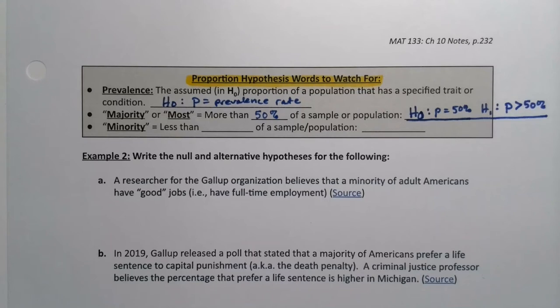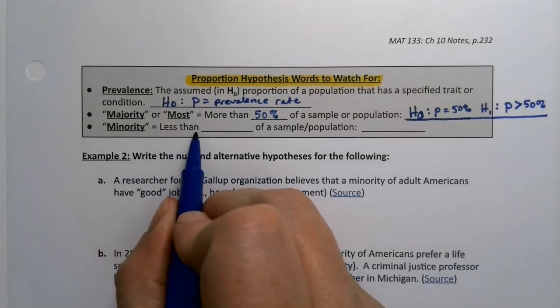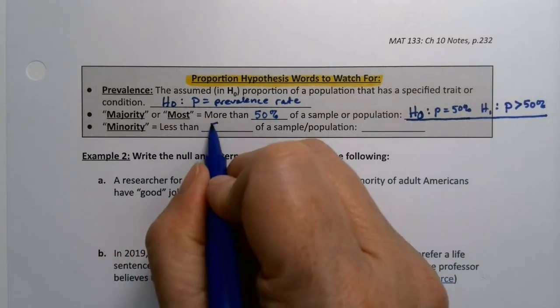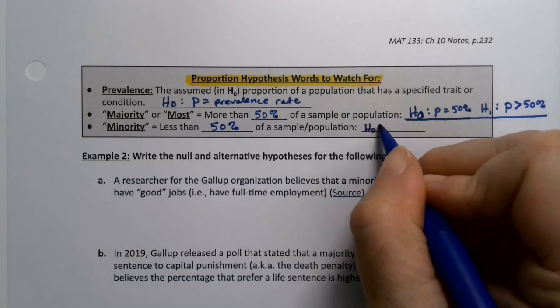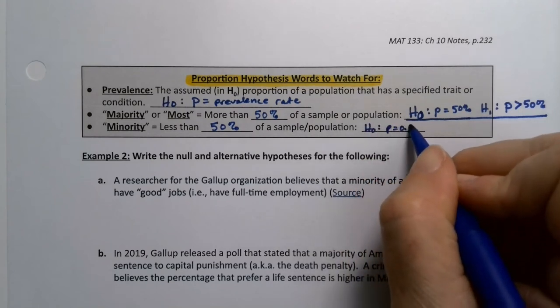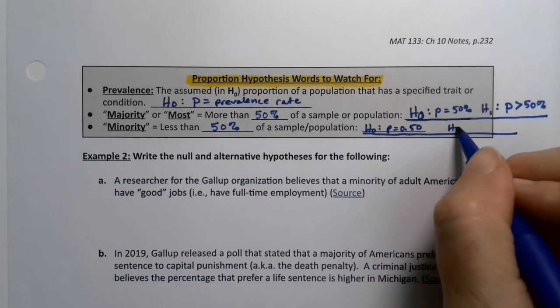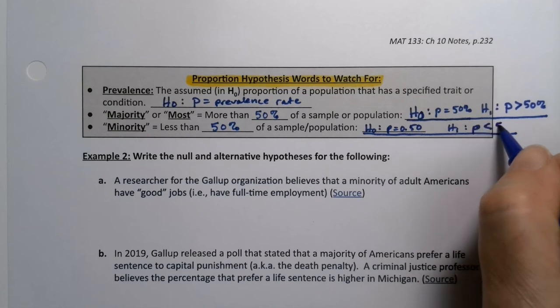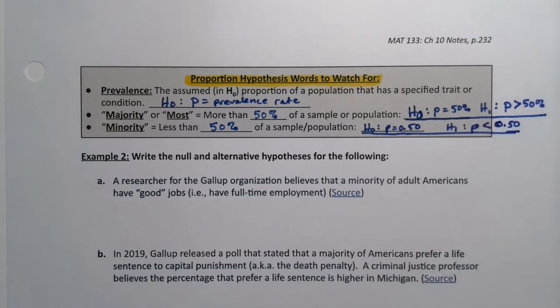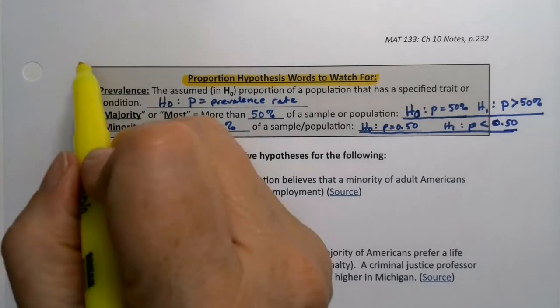Now, what about minority? Well, it's kind of the companion to majority. That would be less than 50%, which means automatically I know that H0 would be P equals 50% or 0.50, and H1 would be P is less than 50% or 0.50.